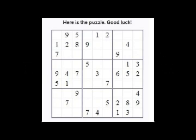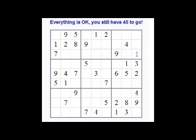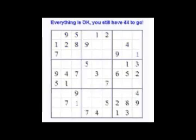A good example of eliminating possibilities can be found in our first solution. We know that row 3, column 9 must be a 1 because rows 1 and 2 already have a 1 present and column 8 has a 1 present. Therefore, in the 3 by 3 box, row 3, column 9 must be a 1.